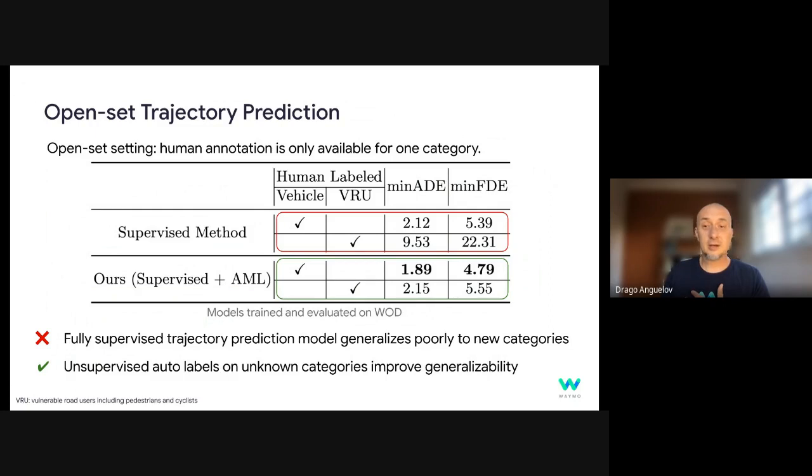And similar things happen for prediction. So we have trying to predict the behavior of objects we've never seen using our auto labels in addition to the ground truth for one object, that's much better for the other object than just in the purely supervised case. Again, I think it's still early. I think given the rich structure, multiple sensors, and temporal consistency that we can enforce, we can go quite far here, and I encourage people to explore this task further.